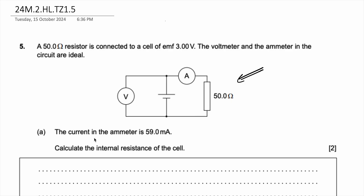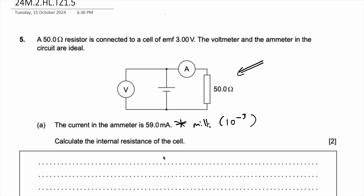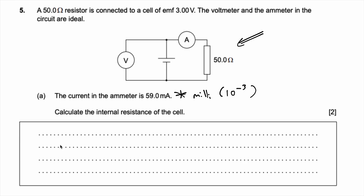The current in the circuit is 59 × 10 to the power of negative 3 amperes — that's 59 milliamperes, which is 10 to the power of negative 3. First, they're asking us to calculate the internal resistance of the cell.